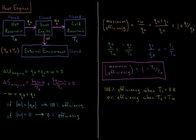In a heat engine, we have a variety of closed systems. We have what is called a hot reservoir with some high temperature Th. We have the heat engine, which receives heat from the hot reservoir. It then pumps some amount of heat to what's called a cold reservoir at some temperature Tc. And it uses some of that energy to do work on the external environment.